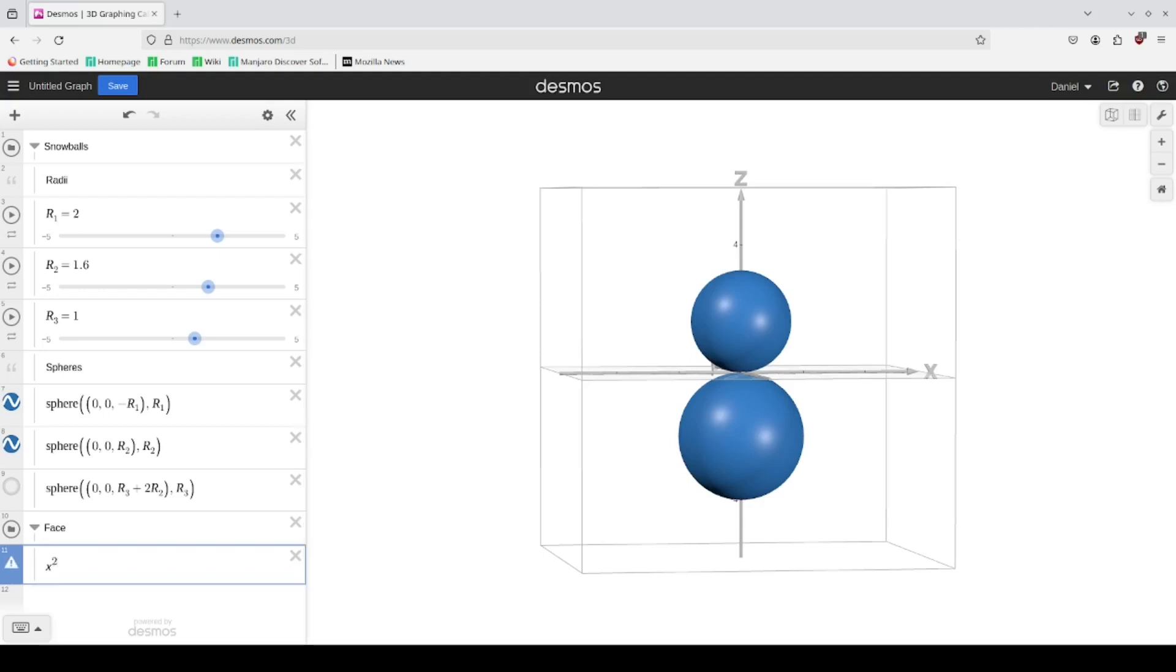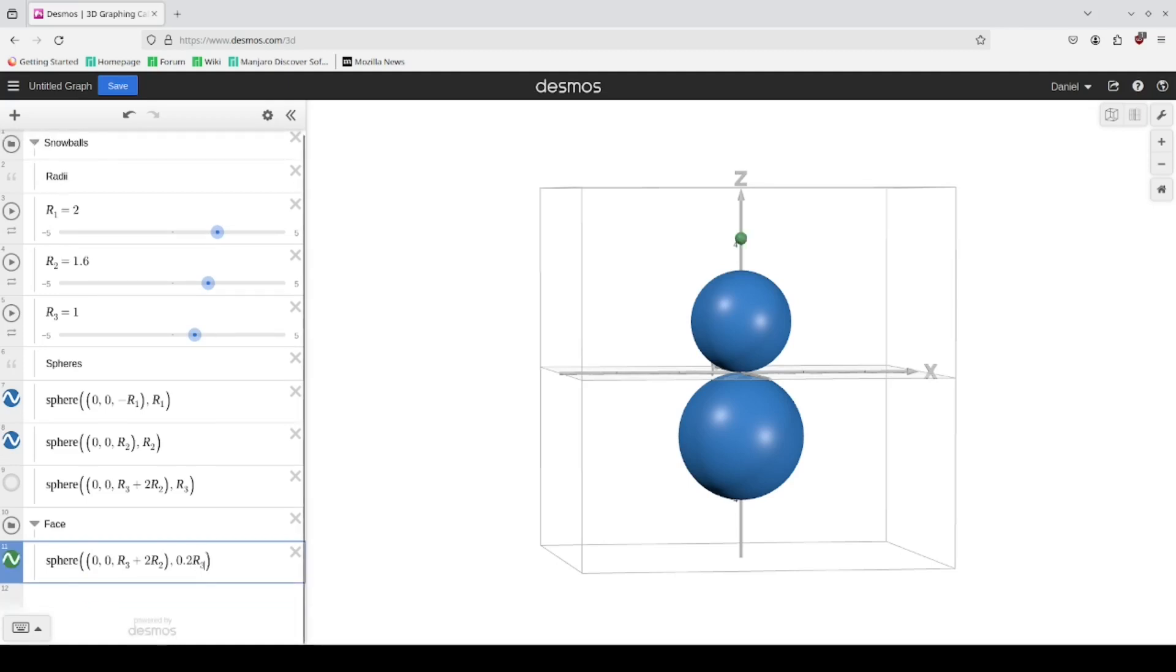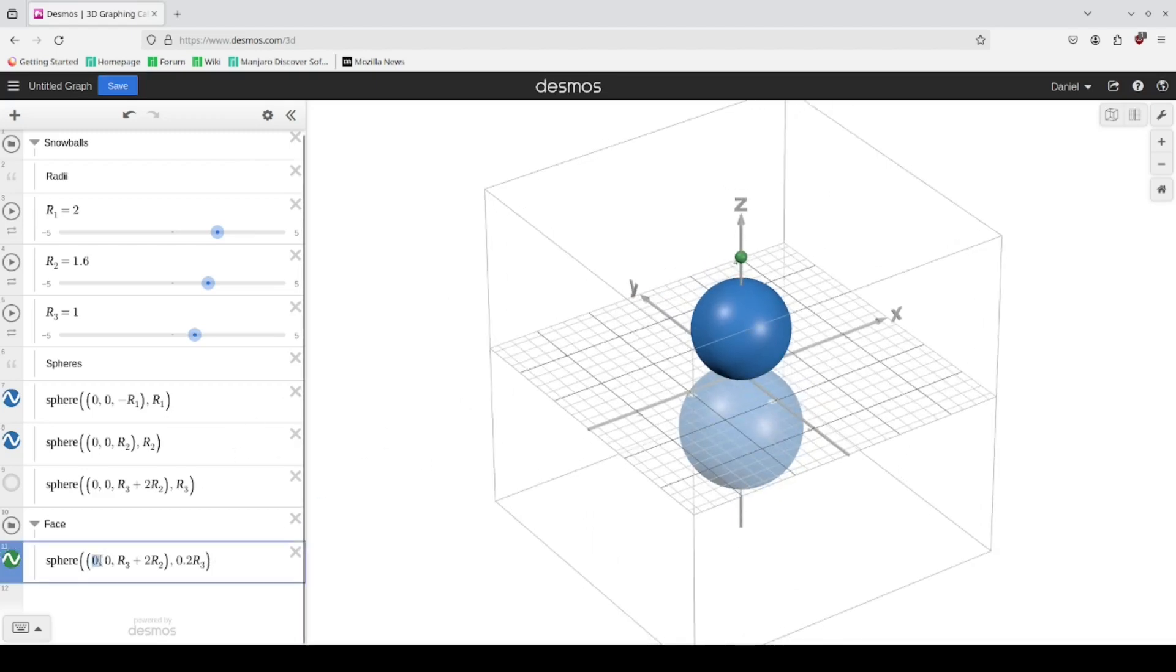I was going to use the equation for a sphere, then realized that it's more intuitive to use the sphere function. We're going to start with this height, and it's going to give it a small radius. I'm going to make it 0.2 times r3.